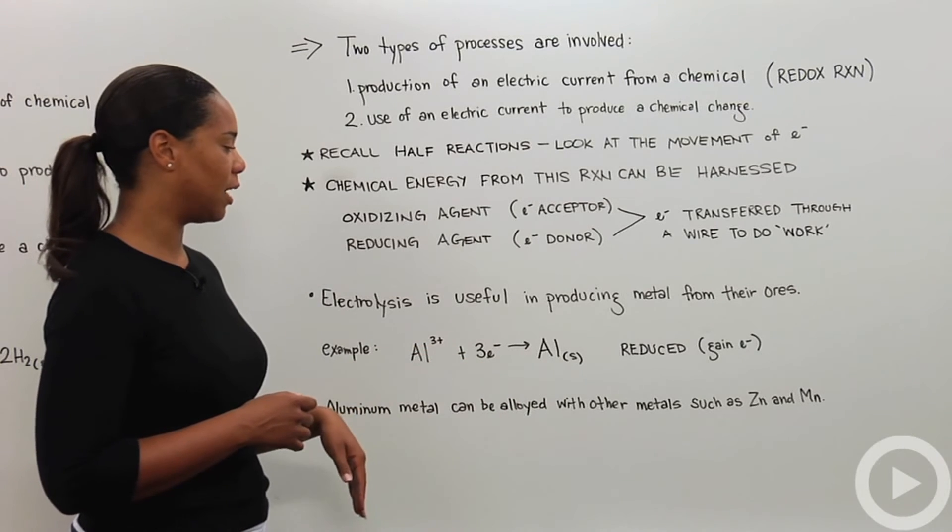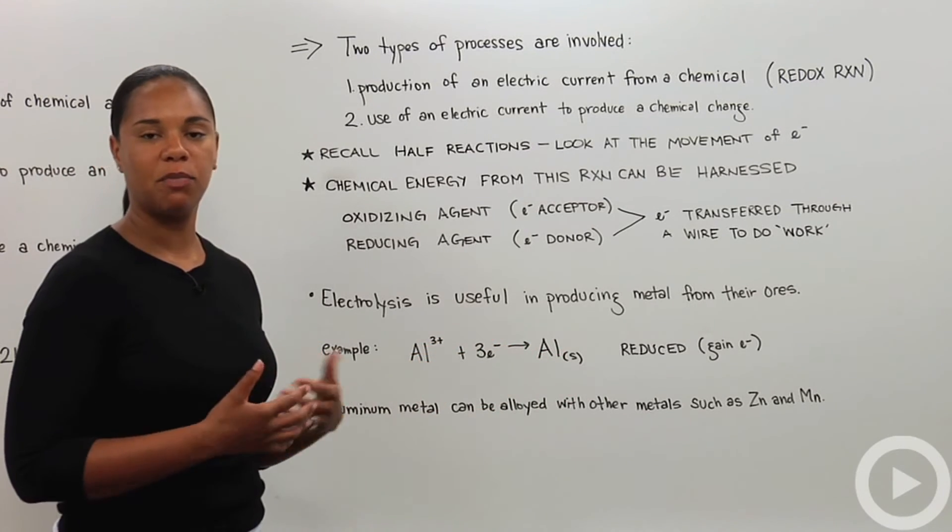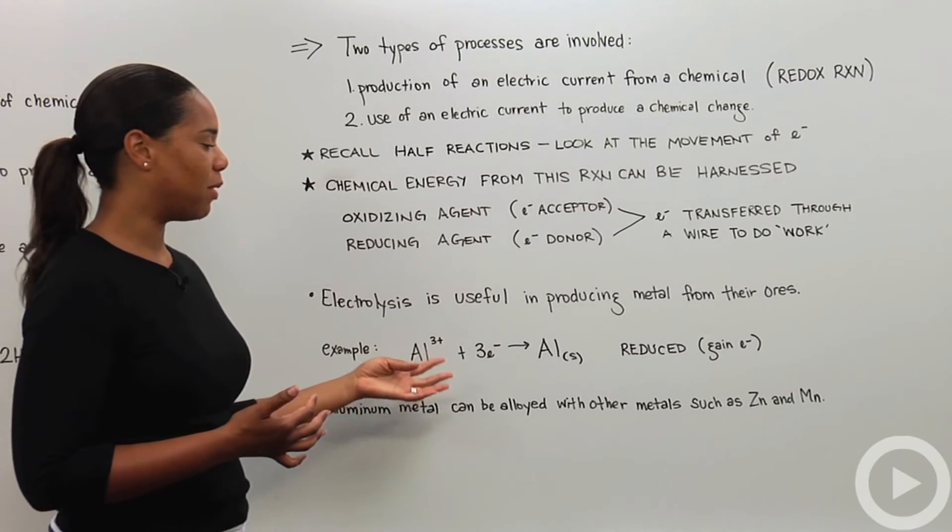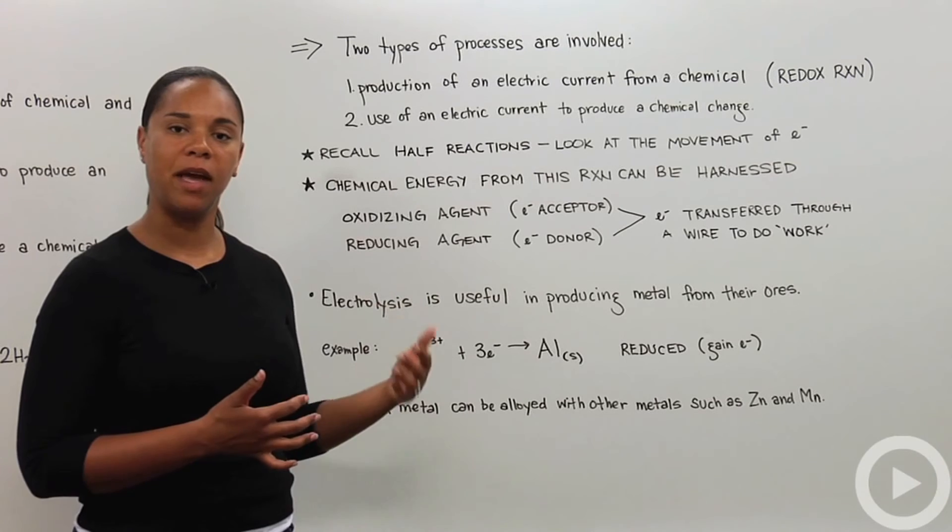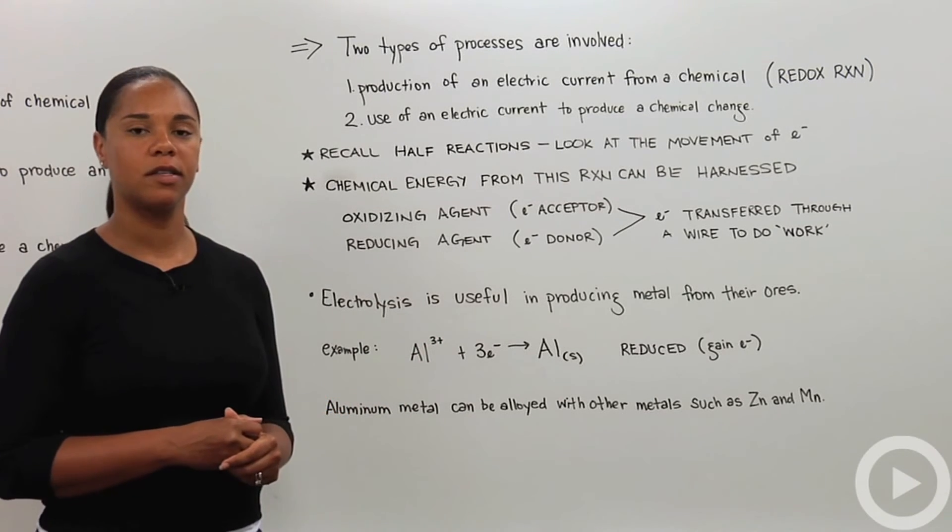After you get this aluminum solid or aluminum metal, you can alloy that with other metals depending on what you're planning on using the aluminum for. Some possibilities are zinc and manganese, and those are the most common. That is the basics of electrolysis.